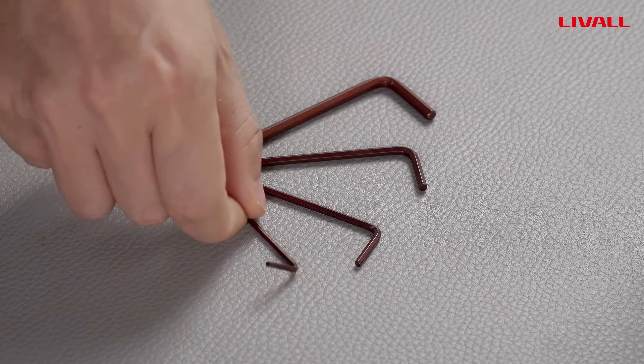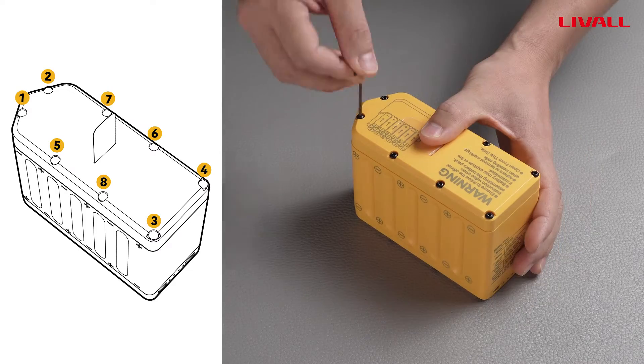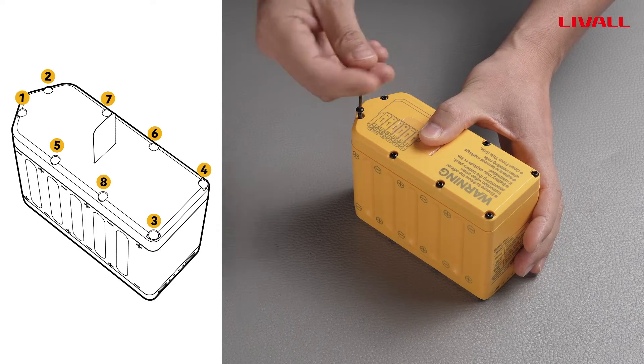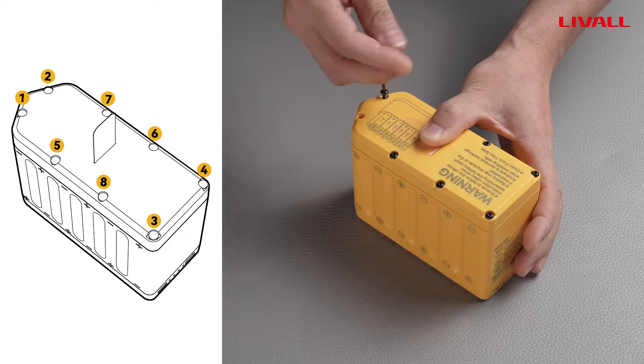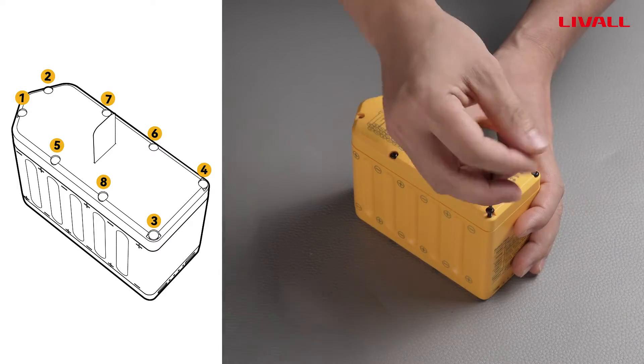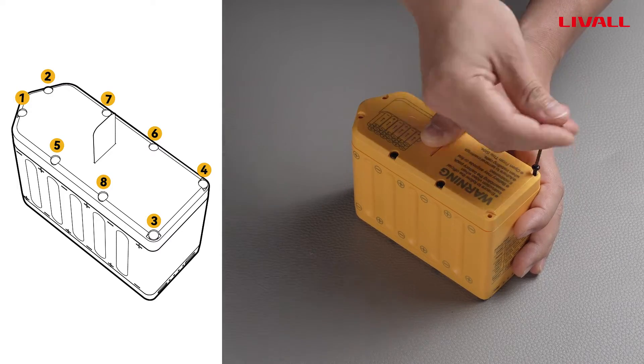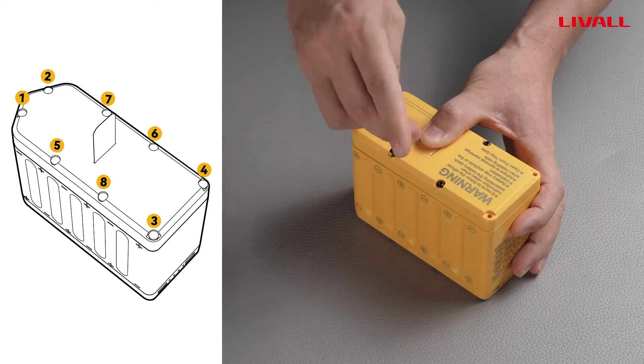Choose the smallest M2 wrench and tighten the screws strictly in sequence. Note that when disassembling screws at positions 7 and 8, it is necessary to alternately loosen them to avoid damaging the cover due to excessive force on one side.